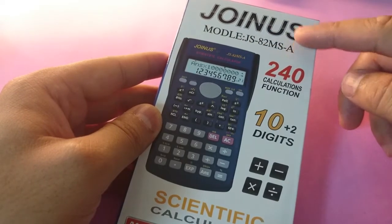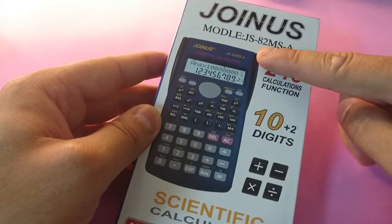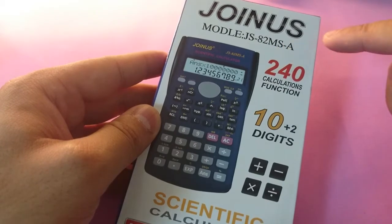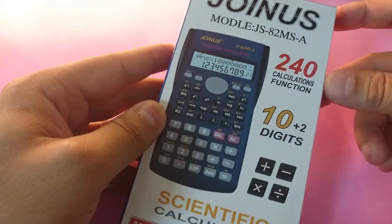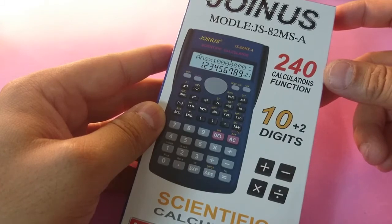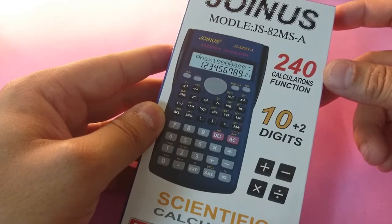I don't know how they spell in Chinese. The model number is JS82MS-A and it claims that it has got 240 calculation functions and 10 plus 2 digits display.